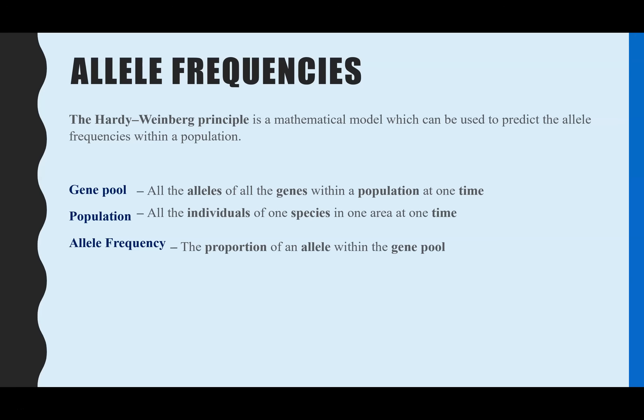The gene pool is all of the alleles of all the genes within a population at one time. The population is all the individuals of just one species in one area at one time. And the allele frequency, which is of most importance for Hardy Weinberg, is the proportion of an allele within the gene pool.